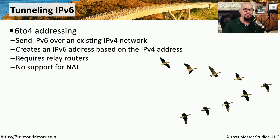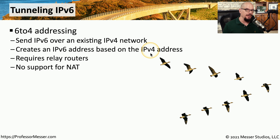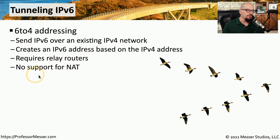If you're deploying IPv6 in your organization, there are a number of different ways to implement this in your environment. One way is to tunnel the IPv6 within an existing network configuration. For example, 6-to-4 is an addressing type that sends IPv6 information over an existing IPv4 address, creating an IPv6 address based on your existing IPv4 address. One challenge with 6-to-4 is that it requires specific relay routers designed to provide this tunneling, and it does not support network address translation, which limits the ability to send this traffic across the internet.